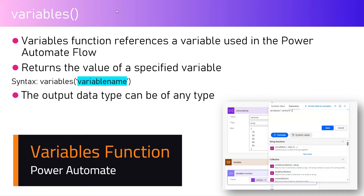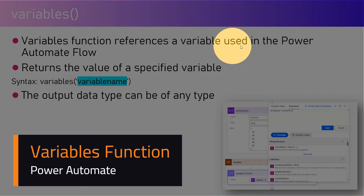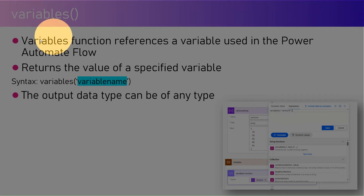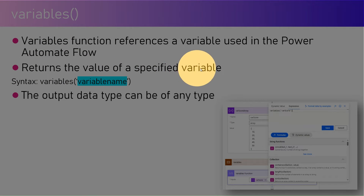In this video, let's look into the variables method within Microsoft Power Automate. The variables method, or function, references a variable used in the Power Automate flow. If you're using any variable in your flow, you can reference those variables using the variables function.